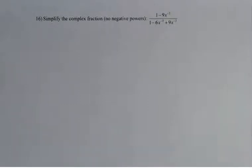We're going to continue the algebra review for my Calculus 1 class. This is problem number 16 from the review handout. We're going to simplify the complex fraction, meaning getting rid of all the negative exponents.